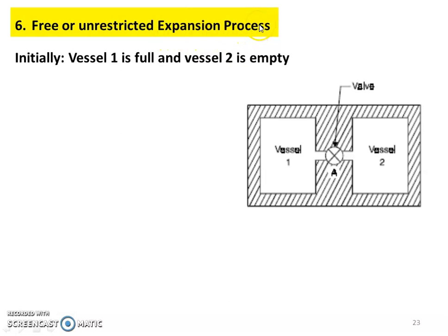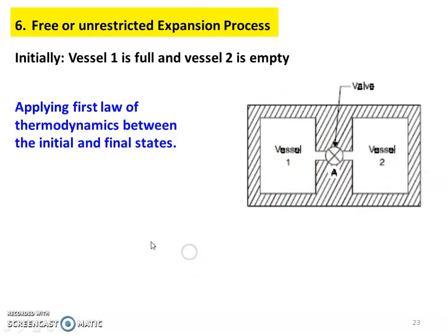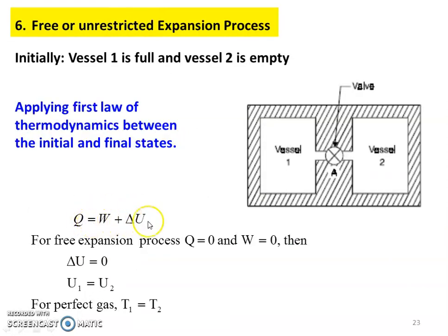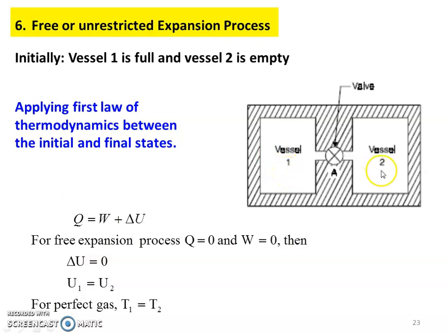Free or unrestricted expansion process: initially, vessel 1 is full and vessel 2 is empty. It is a completely insulated vessel. Vessel 1 and vessel 2 are connected by a valve. Applying the first law of thermodynamics between the initial and final states: Q equals W plus delta U. For free expansion, Q equals zero (vessel is insulated), and W equals zero (no work is done). Therefore delta U equals zero, so U1 equals U2. Initial and final internal energies are equal. For a perfect gas, this means T1 equals T2.